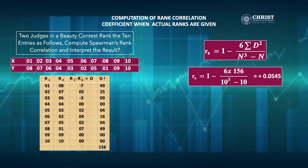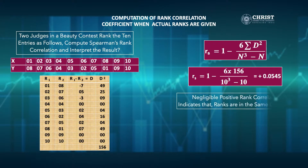The result is rs = +0.0545. This negligible positive rank correlation indicates that the ranks are in the same direction; however, though the ranks are in the same direction, the judges are not in complete agreement as to common taste of beauty.